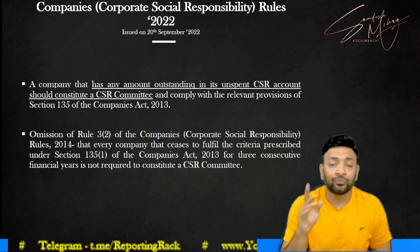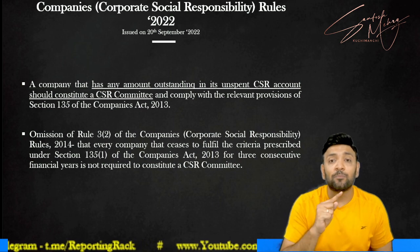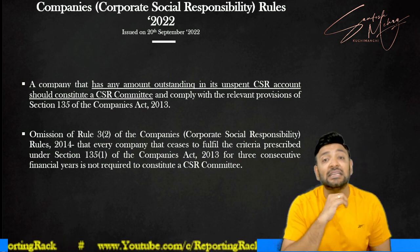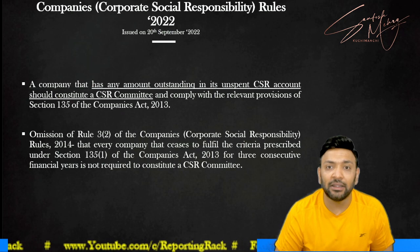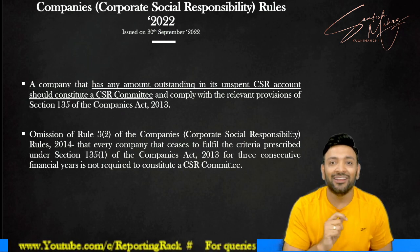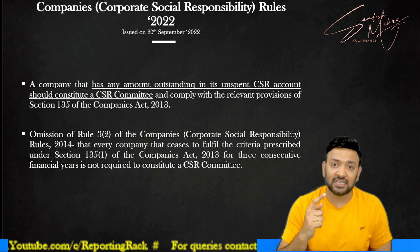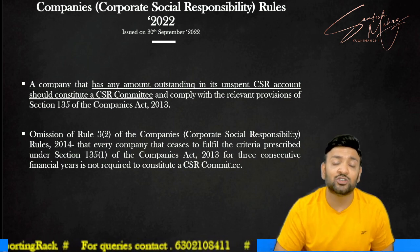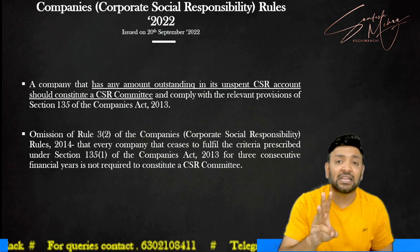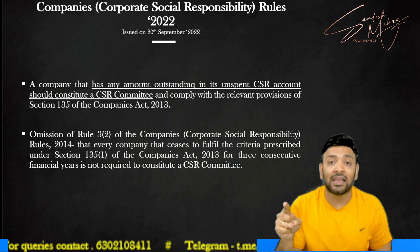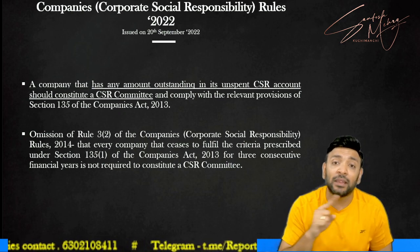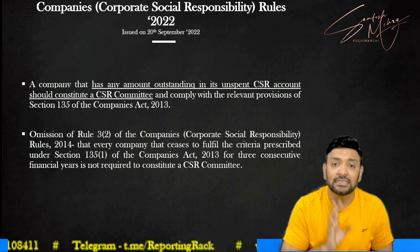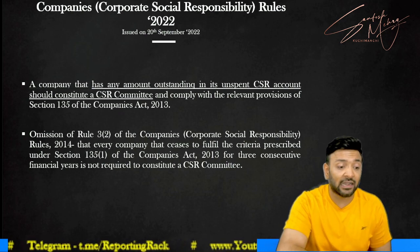The other change: previously, if a company did not meet the threshold under Section 135 for three consecutive years, it was exempted from forming a CSR Committee. However, that exemption has now been withdrawn. This means even if a company no longer meets the net worth, turnover, or net profit thresholds of Section 135 for three consecutive years, the CSR Committee must continue to remain active. These are the two key changes in Section 135 relating to CSR expenditure.